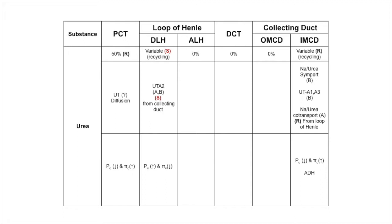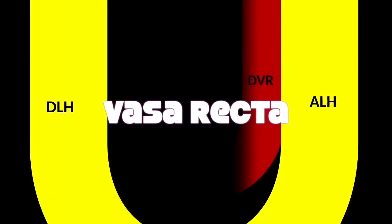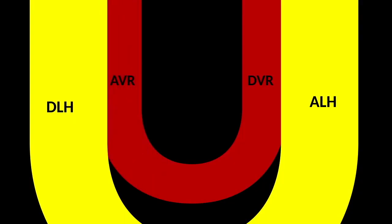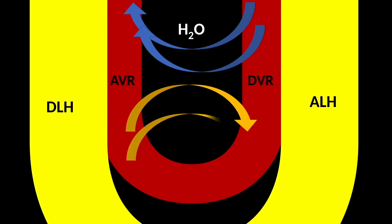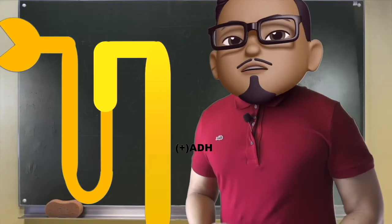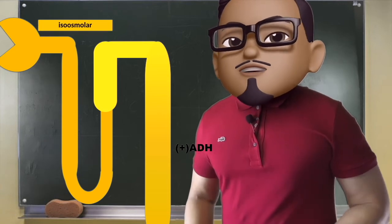ADH increases urea reabsorption in the inner medullary collecting duct. In essence, sodium is actively pumped out of the thick ascending limb and passively reabsorbed in the thin ascending limb. The flow of water and solute is seen in the vasa recta, with hydrostatic pressure driving water out of the descending vasa recta and oncotic pressure in the ascending vasa recta aiding in its reabsorption. The sodium chloride movement is from the ascending vasa recta to the descending vasa recta due to the sodium gradient created by the thick ascending limb.